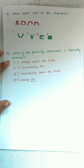Which of the following statements is logically incorrect? The first is 'I always speak the truth,' the second is 'I occasionally lie,' the third is 'I occasionally speak the truth,' and the fourth is 'I always lie.' The fourth one is logically incorrect, because if you always lie, then that statement itself would also be a lie, which is a paradox. So the fourth option is the right answer. Thank you for watching.